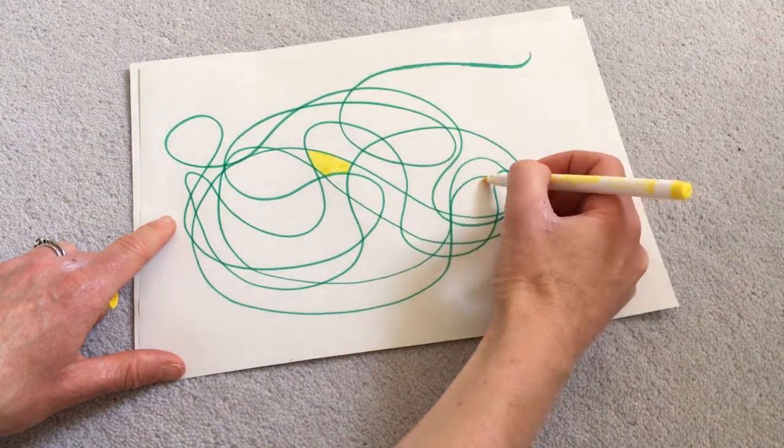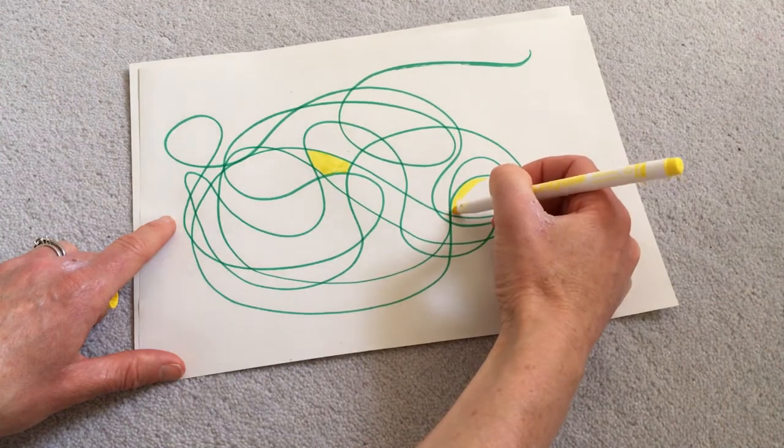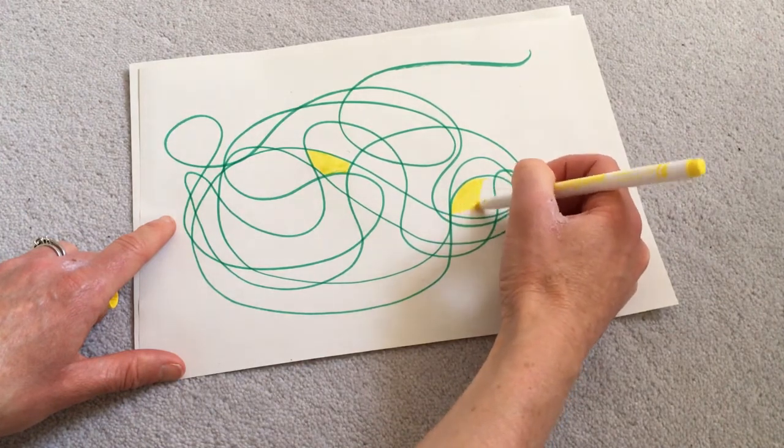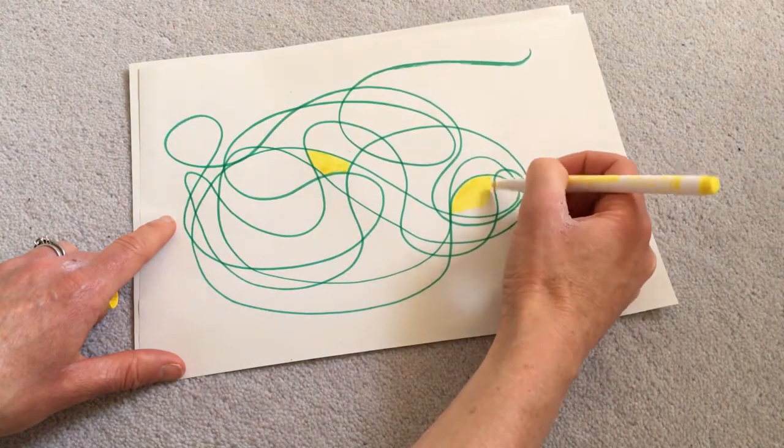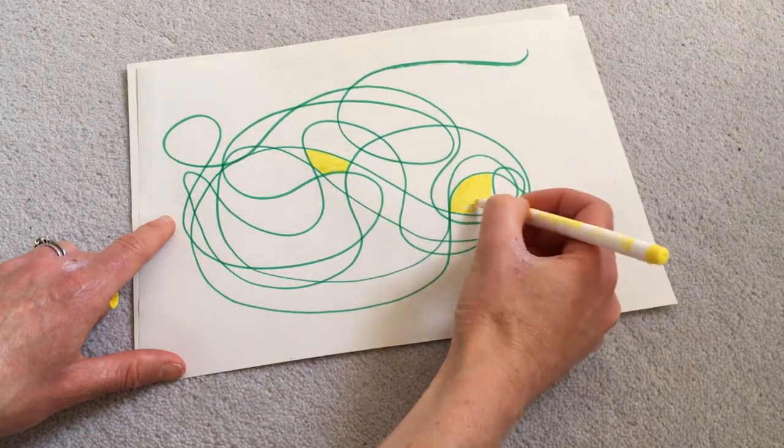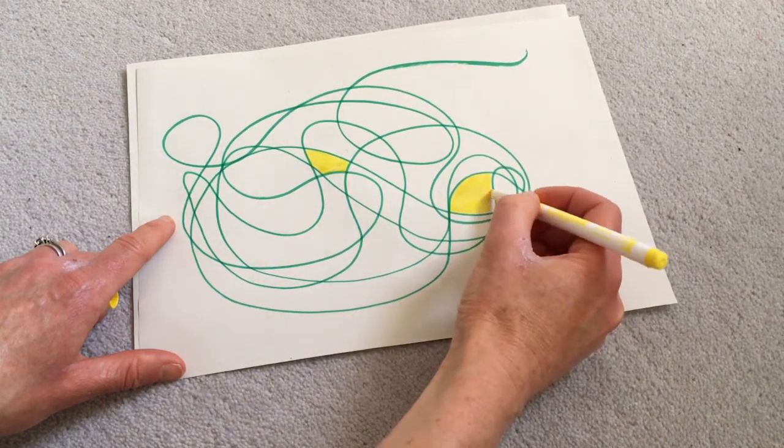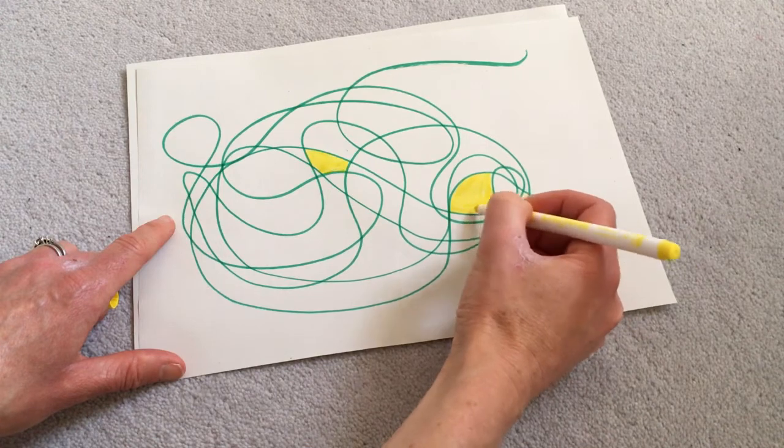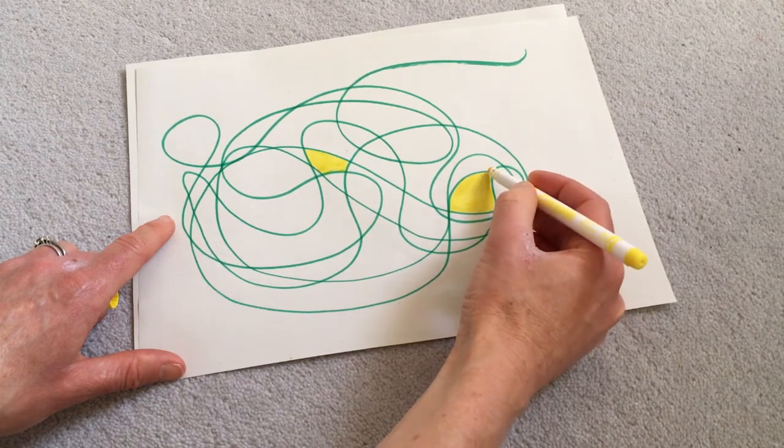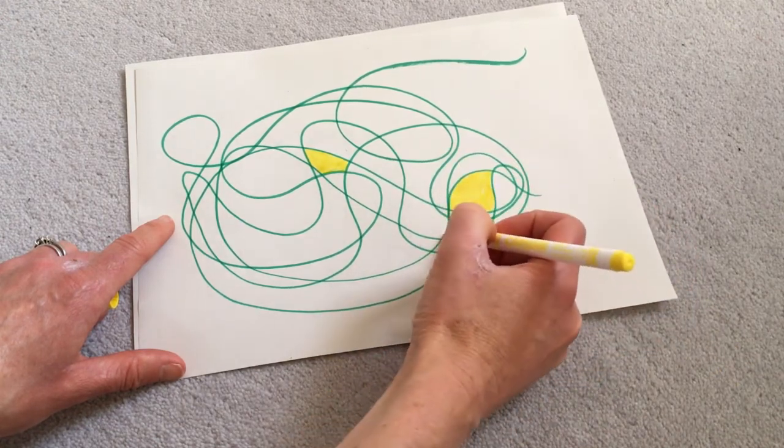And I'm really trying to do good colouring. This isn't critical to do good colouring, but for older people, for older children and for the grown-ups, actually really concentrating on staying inside the lines.